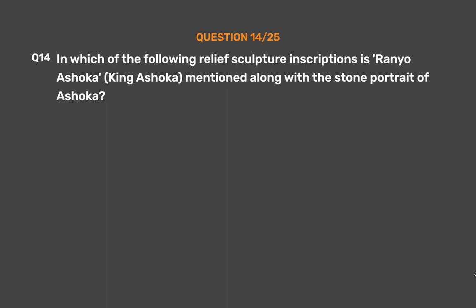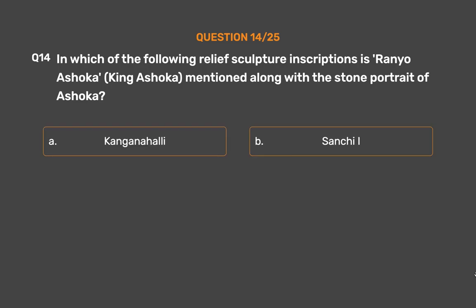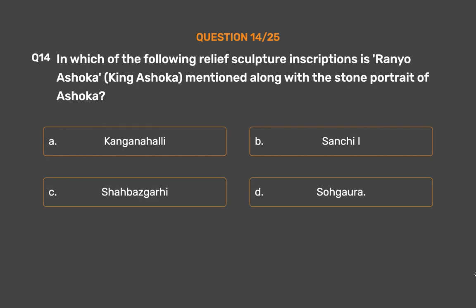Question No. 14: In which of the following relief sculpture inscriptions is 'Ranyo Ashoka' (King Ashoka) mentioned along with a stone portrait of Ashoka? Option A: Kanganahali. Option B: Sanchi I. Option C: Shahbazgarhi. Option D: Sohagora.